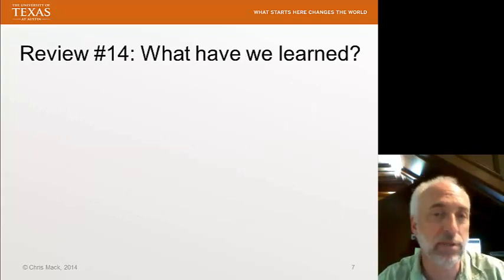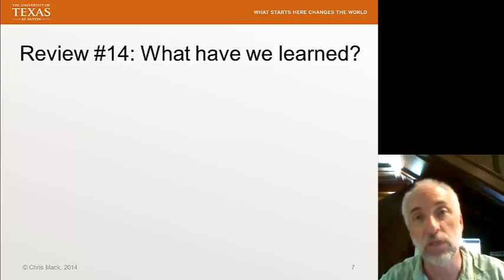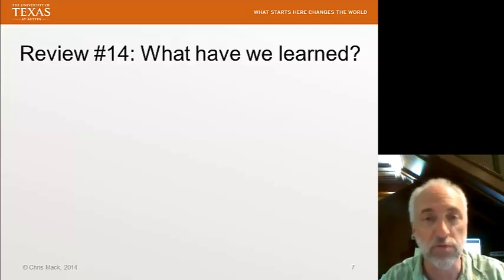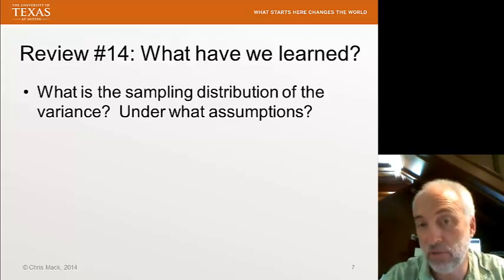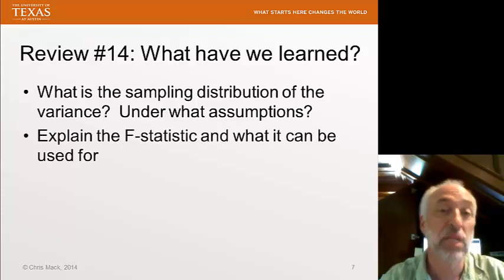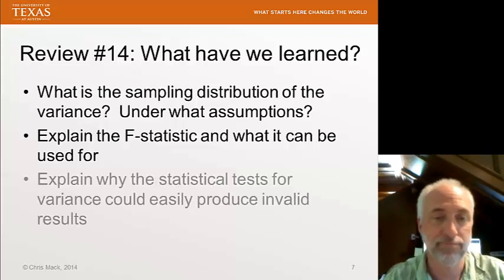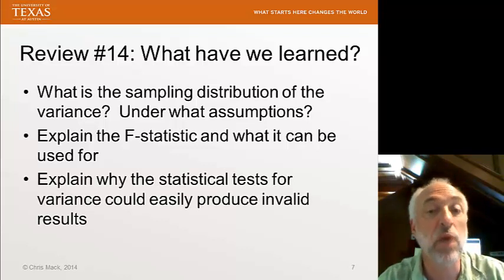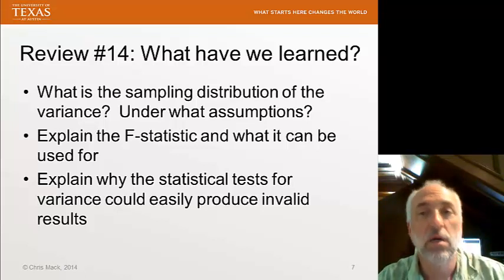All right. What have we learned in lecture number 14? As always, you should be able to quickly and easily answer these questions. If not, you should go back and review the material again. What is the sampling distribution of the variance? And under what assumptions is this the sampling distribution of the variance? Explain the F statistic and what it is used for. And finally, explain why the statistical tests for variance could easily produce invalid results.